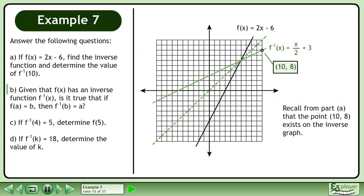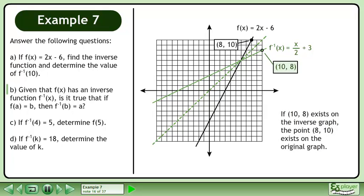Recall from part a that the point exists on the inverse graph. If 10, 8 exists on the inverse graph, the point 8, 10 exists on the original graph.